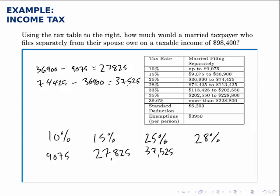Then we have the fourth bracket, the 28% bracket, where we put the rest of our money. Notice that with a taxable income of $98,400, we don't spill over into the fifth bracket — we only have dollars 74,425 through 98,400 remaining. To find how many go in the fourth bracket, we take 98,400 minus 74,425 and get $23,975.